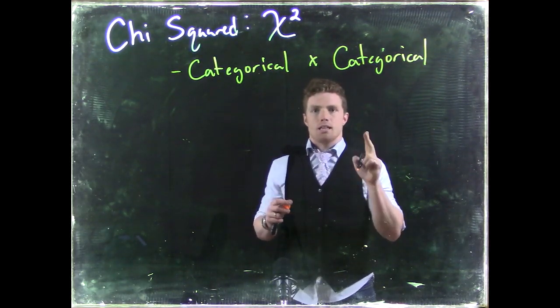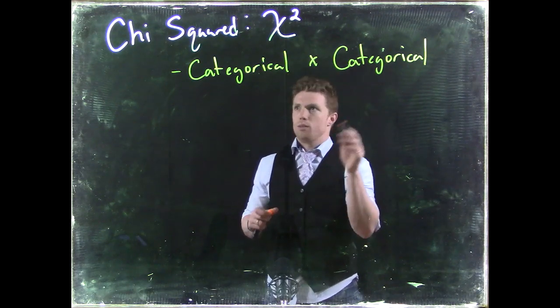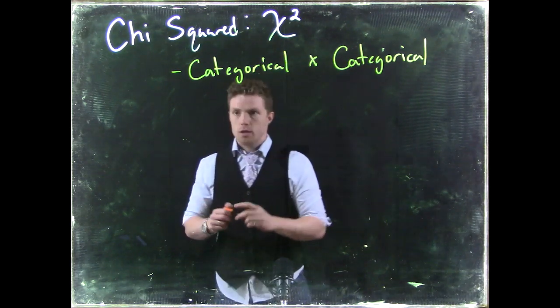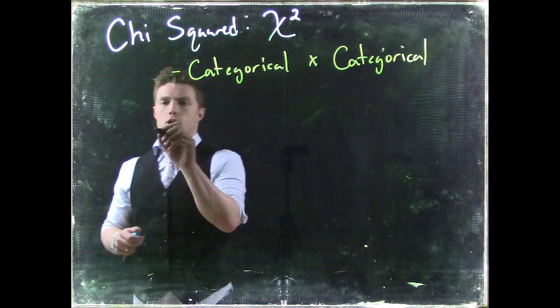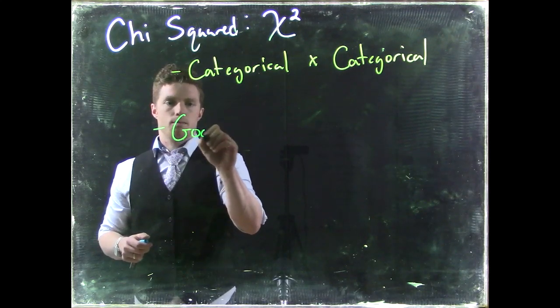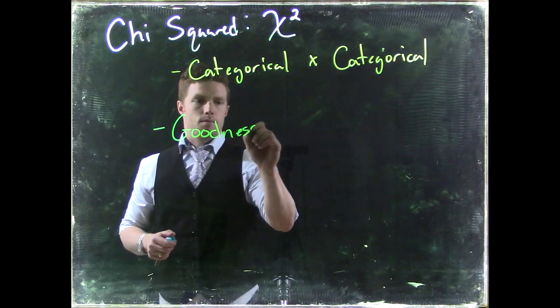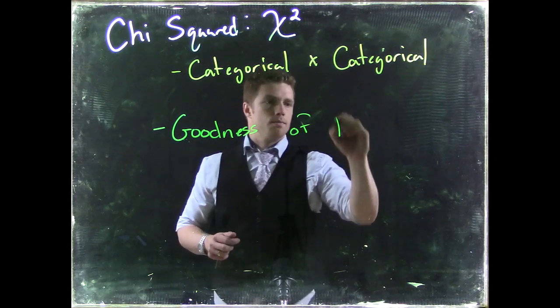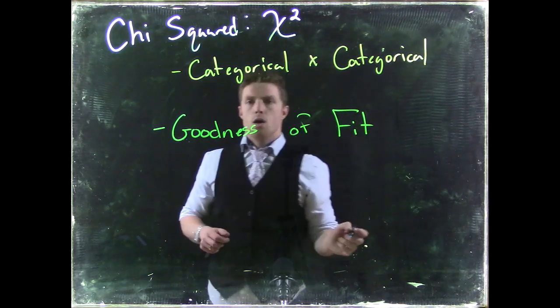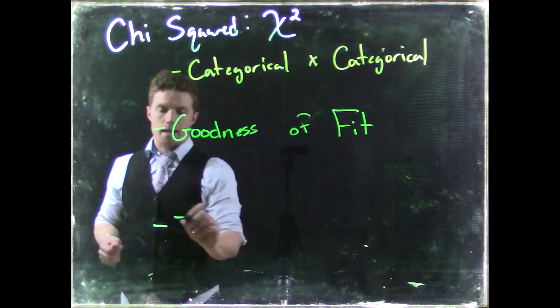And we are really asking like two different questions when we are thinking about using our chi-squared. We either want to do A, a goodness of fit, or B, we can do what is called the test for independence.